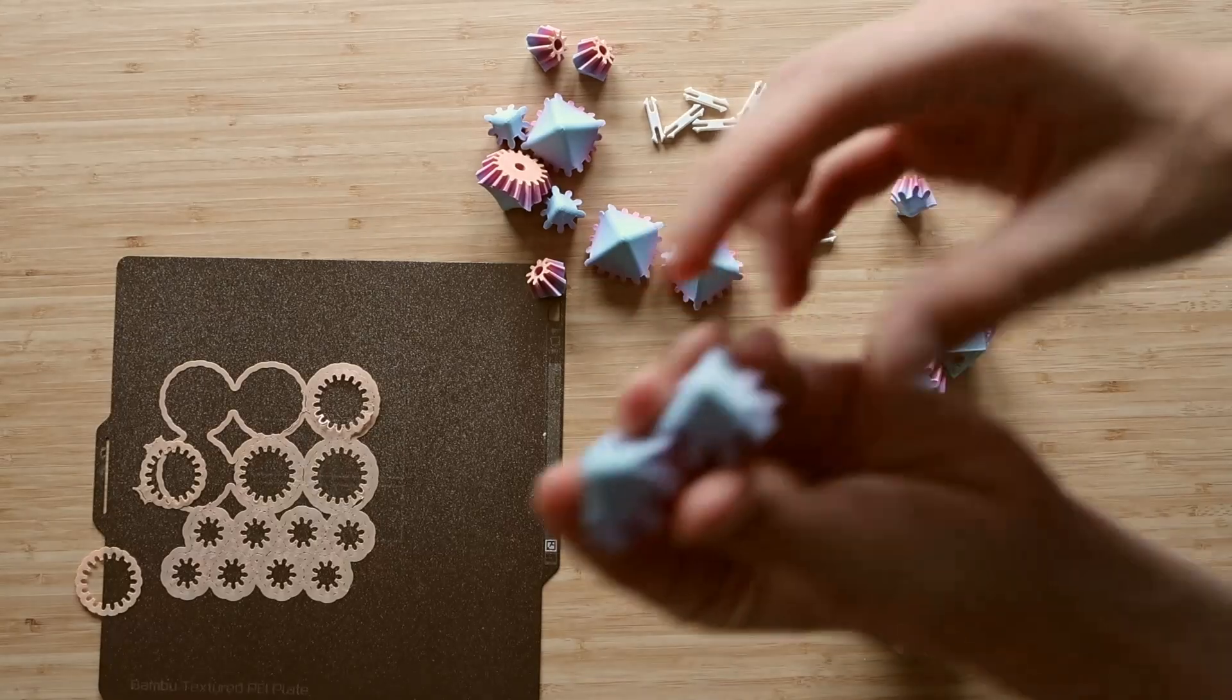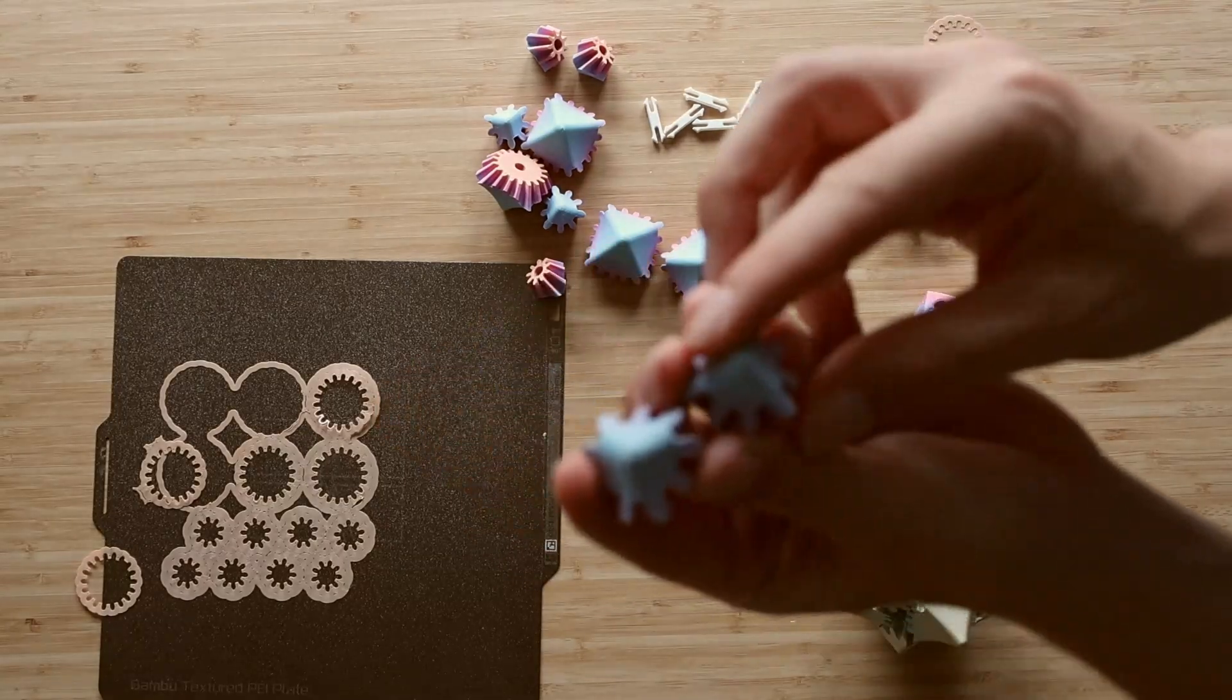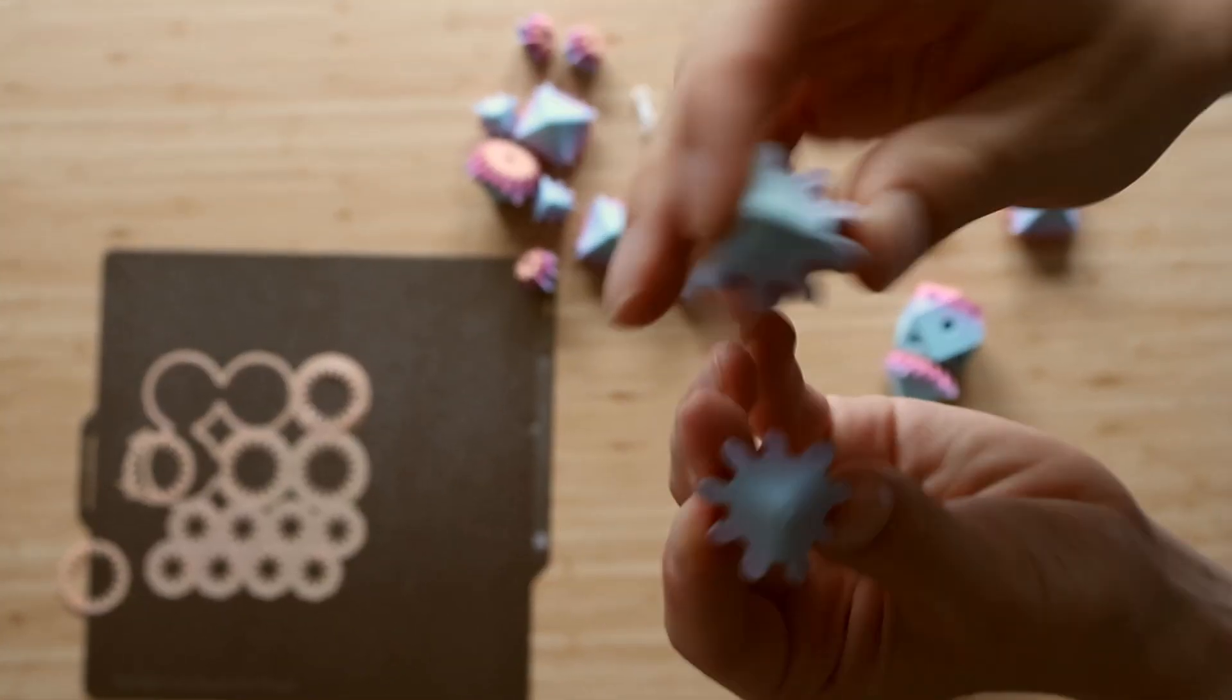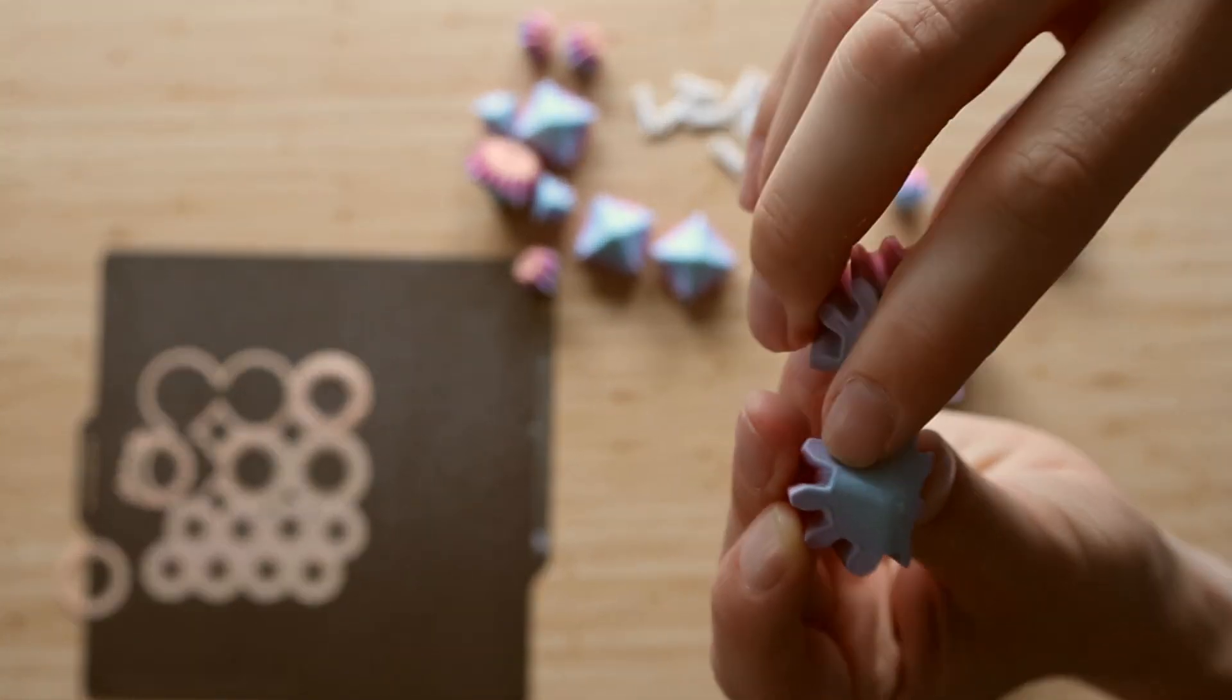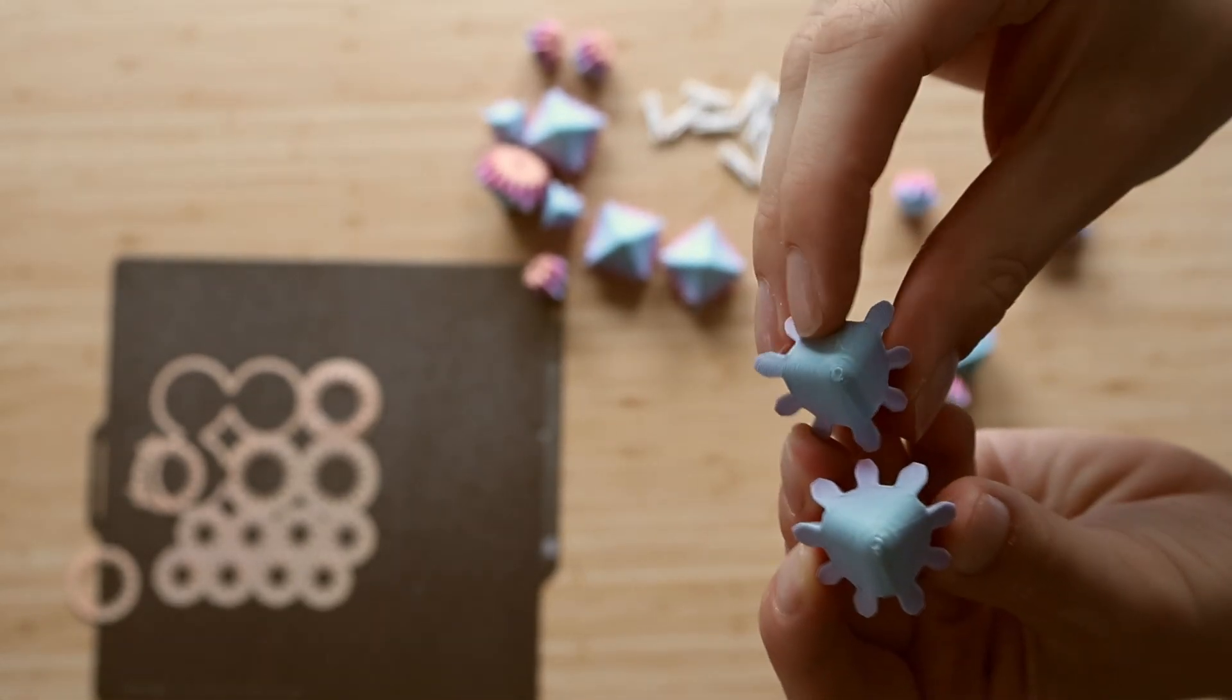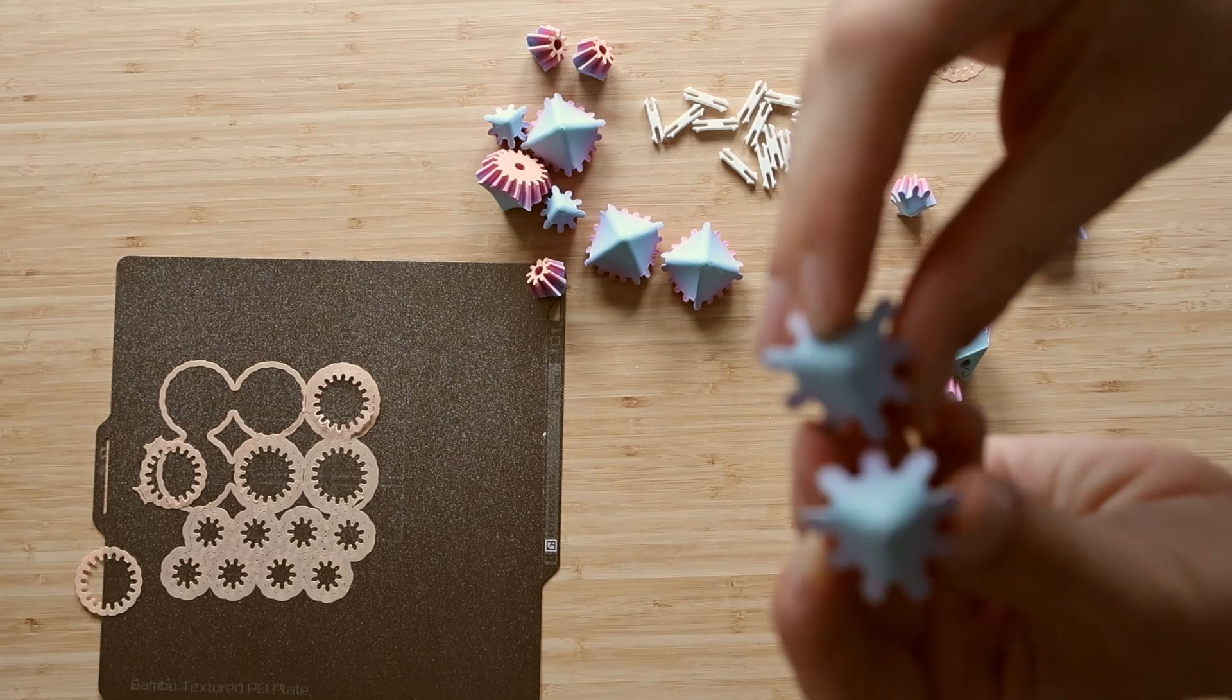There's also something important as you can see right here. We have two different small gears. They are slightly different. This one has a gap on the edge and this one has a tooth of the gear on the edge.